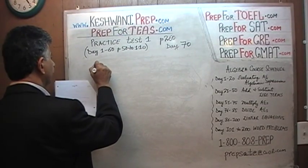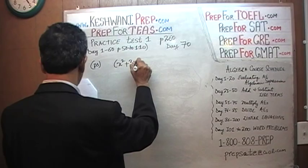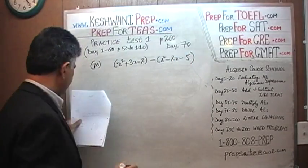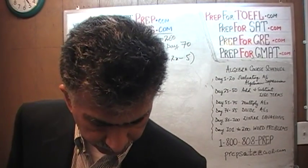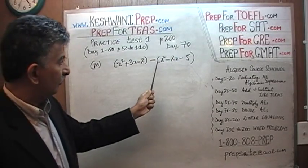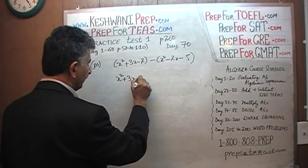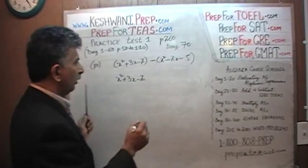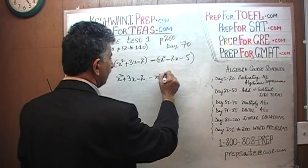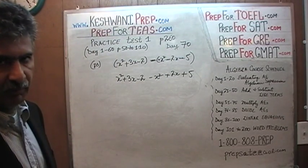Number 26: x squared plus 3x minus 2, minus the quantity x squared minus 2x minus 5. We simply have to simplify this expression. Notice that we have a minus sign here, so when we open this parenthesis all of these signs will have to be changed. The first part stays the same: x squared plus 3x minus 2. When we distribute this negative sign, positive x squared becomes negative x squared, negative times negative 2x becomes positive 2x, and negative times negative 5 becomes positive 5.